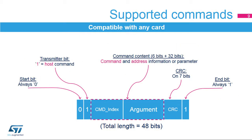The SDMMC controller offers high flexibility for configuring command indexes and arguments, with a flexible 32-bit register for arguments and an independent 6-bit field for the command index. This architecture ensures that firmware can address any type of card. The command path state machine is able to generate all command tokens with no restrictions on command index or argument. The start bit, transmitter bit, CRC, and end bit fields are automatically generated and sent on the bus.